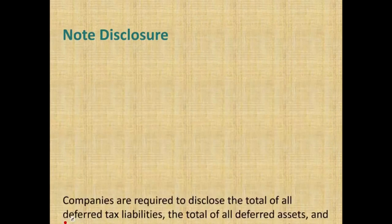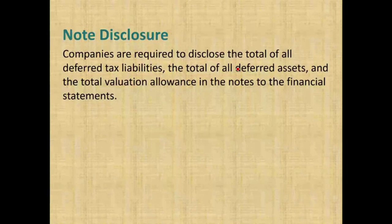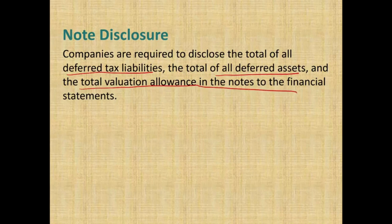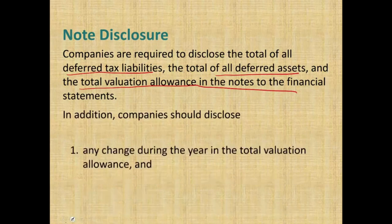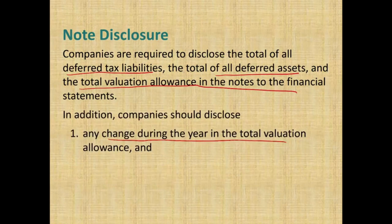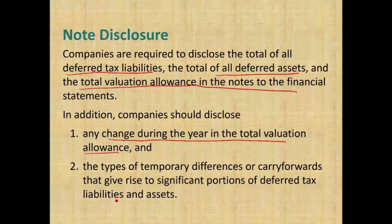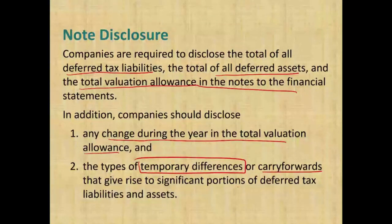What do we have to show in the notes? Companies are required to disclose the total of all deferred tax liabilities, the total of all deferred tax assets, and the total valuation allowance in the notes to the financial statements. You also have to show any change during the year in the total of the valuation allowance — so if you increase or decrease your valuation allowance, you must disclose this. Additionally, you must disclose the type of temporary differences or carryforwards that give rise to a significant portion of the deferred tax asset and deferred tax liability.